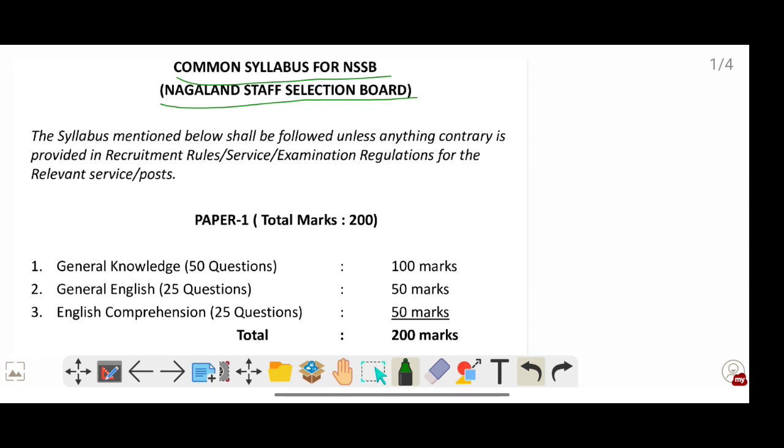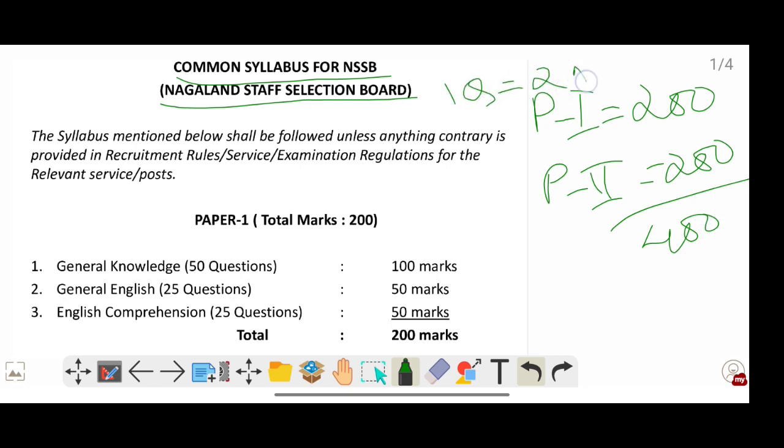There will be Paper 1 and Paper 2. Both papers will carry 200 marks each and the total will be 400. Each question will carry two marks.